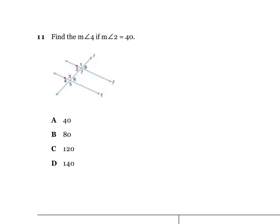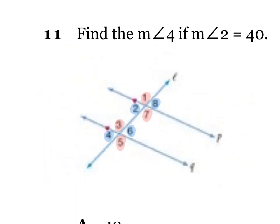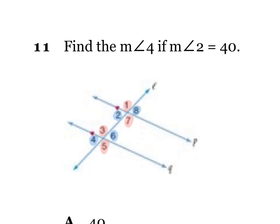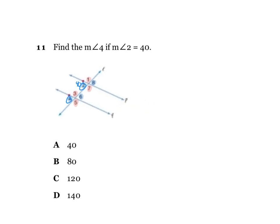Number 11: find the measure of angle 4 if angle 2 is 40 degrees. Going through and highlighting matching angles: angles 8 and 2 are the same, angles 6 and 4 are the same, angles 1 and 7 are the same, and angles 3 and 5 are the same. They're telling us angle 2 is 40 degrees. Since angle 2 and angle 4 are both the same color — they're corresponding angles — they have to be the same value. That's more than enough to get your answer.